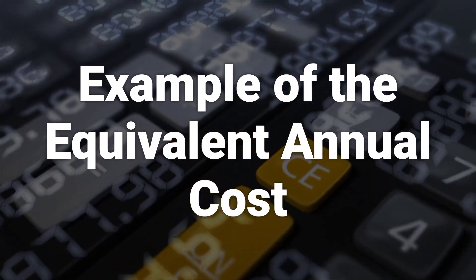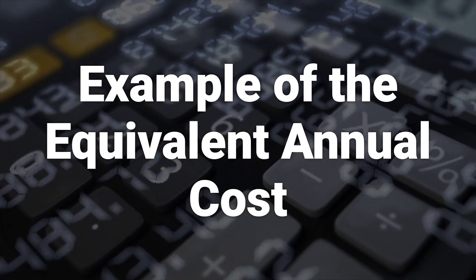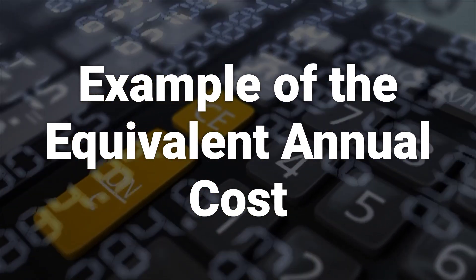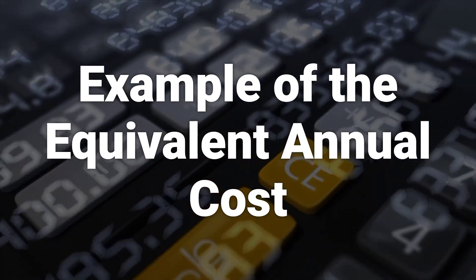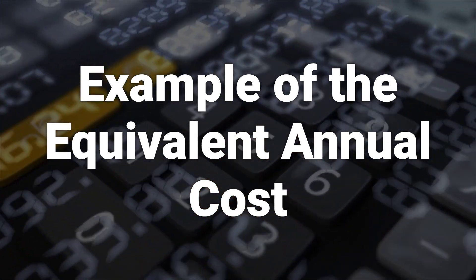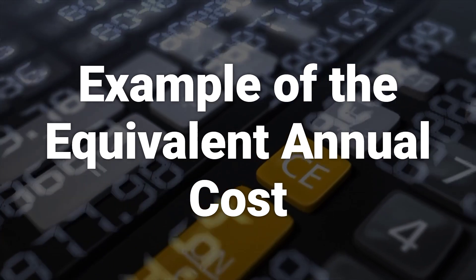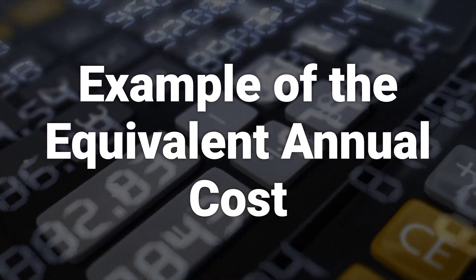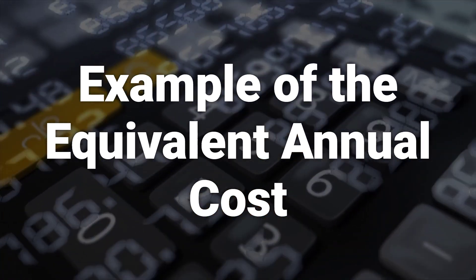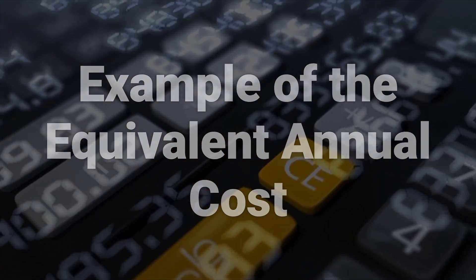To illustrate the use of EAC, consider two alternative investments in machinery equipment: machine A and machine B. By calculating the EAC of each machine, a manager can determine the most cost-effective option, taking into account the cost of capital and the annuity factor.